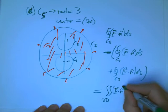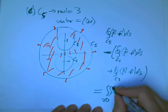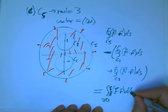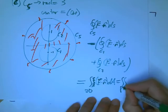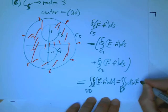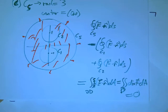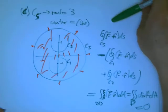F dot N, oh wait, yeah, that's a single integral still. I haven't used the divergence theorem yet, but now I'm going to. That's the integral over D of div F dA, and that's zero.